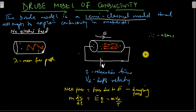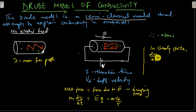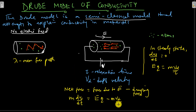Under steady-state conditions, the acceleration is going to be zero — that means dVd/dt equals zero. So from this equation, it means E times Q is going to be equal to M times Vd over tau.